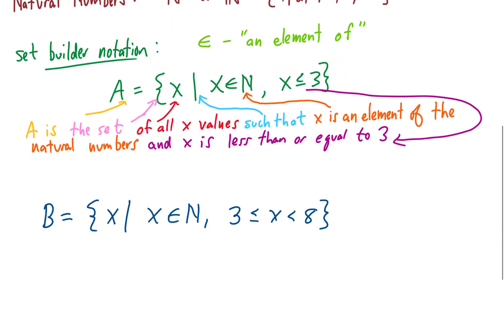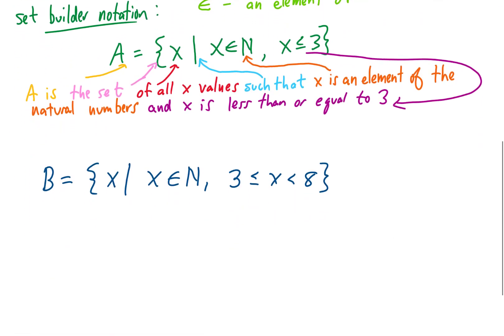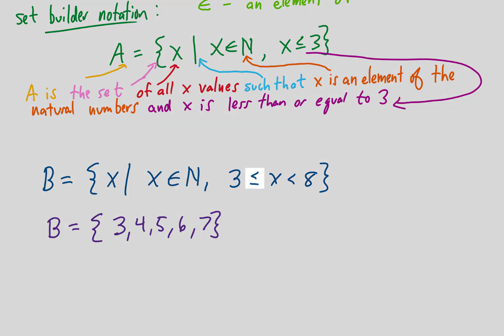Another quick example of set builder notation before moving on. Here we have B is the set of all x values such that x is an element of the natural numbers and x is greater than or equal to 3 and x is less than 8. If we wanted to write this set out in roster form, it would be the set of the elements {3, 4, 5, 6, 7}. Now I included the element 3 because of this equal sign, and I did not include the element 8 because there is no equal sign here.